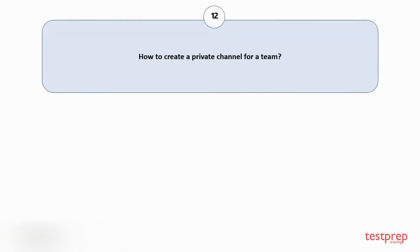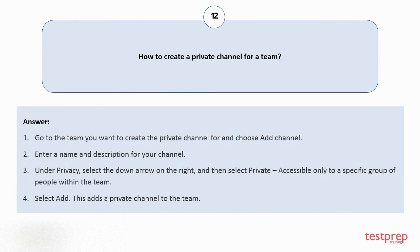Question number 12: How to create a private channel for a team? 1. Go to the team you want to create the private channel for and choose add channel. 2. Enter a name and description for your channel. 3. Under privacy, select the down arrow on the right, and then select private — accessible only to a specific group of people within the team. 4. Select add. This adds a private channel to the team.